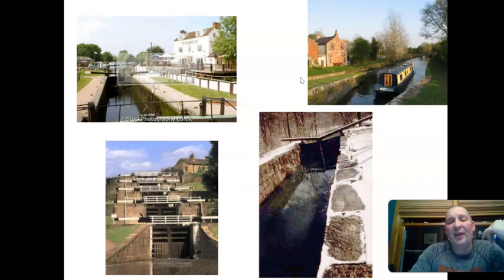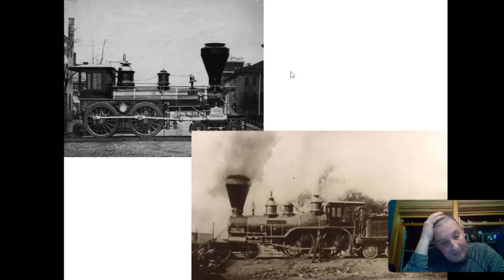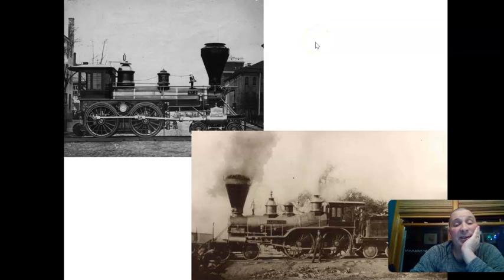Both steamboats and canals were eclipsed by the next transportation development: the railroad. The earliest train was in 1829, connecting a coal town to a manufacturing town — actually Liverpool to Manchester, a beetle town to a soccer town. By the 1840s, the US and England were greatly building up their railroads.